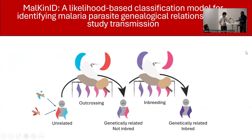Our next speaker is Dr. Wesley Wong. Wes is a research scientist at the T.H. Chan School of Public Health at Harvard, and also a former IDM postdoc. Wes is an expert — if you just look at his papers, it's basically a series of very innovative models linking genetics and epidemiology, really trying to extract the most we can out of complex genetic data to inform public health decision making. Today's talk is exactly in that vein.